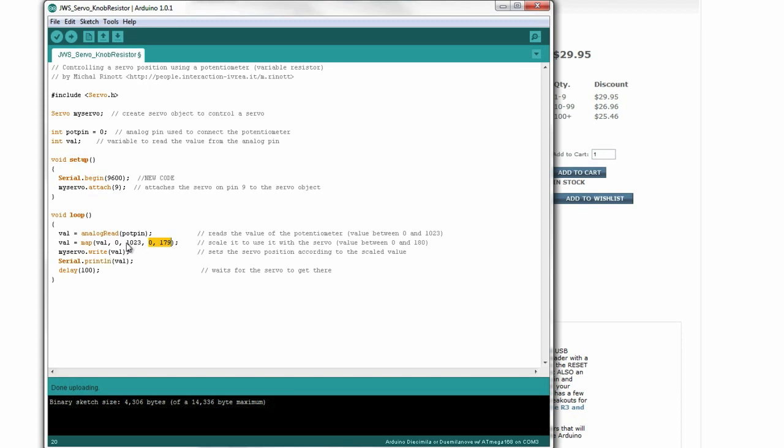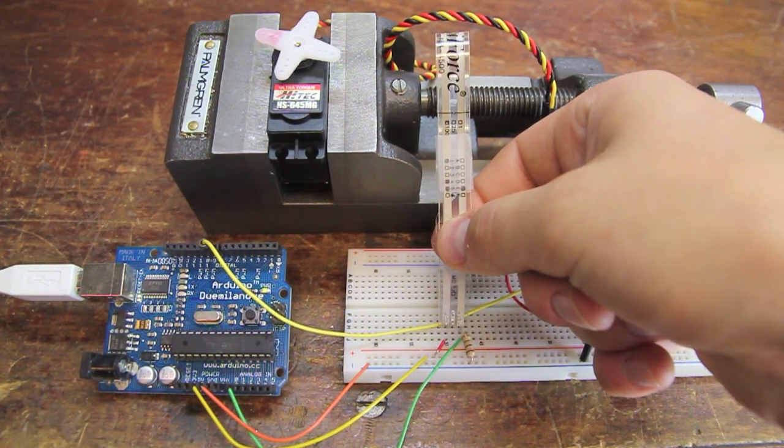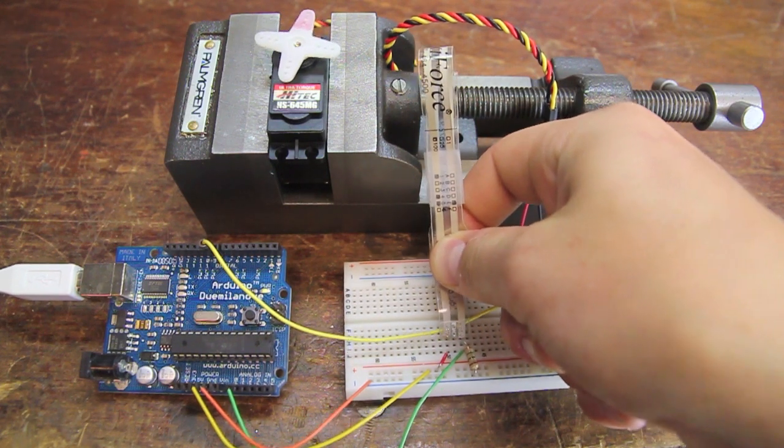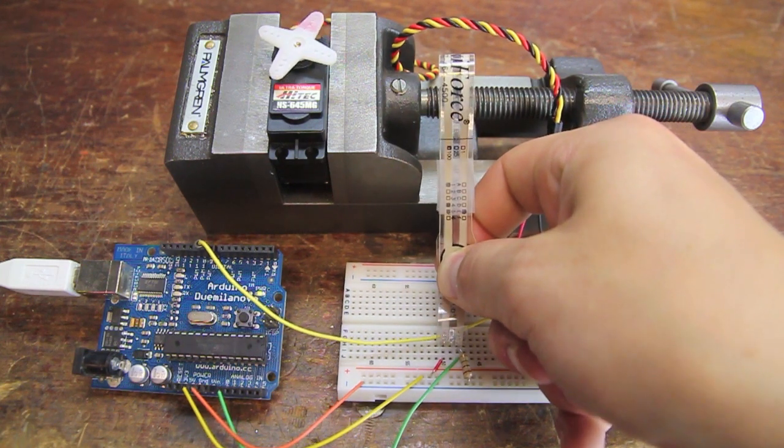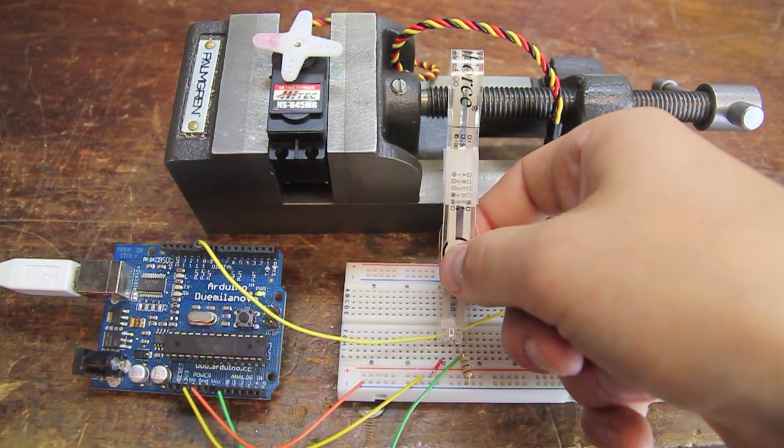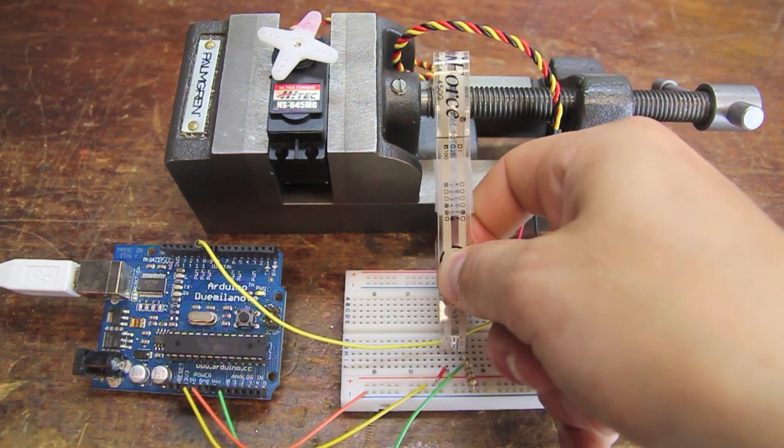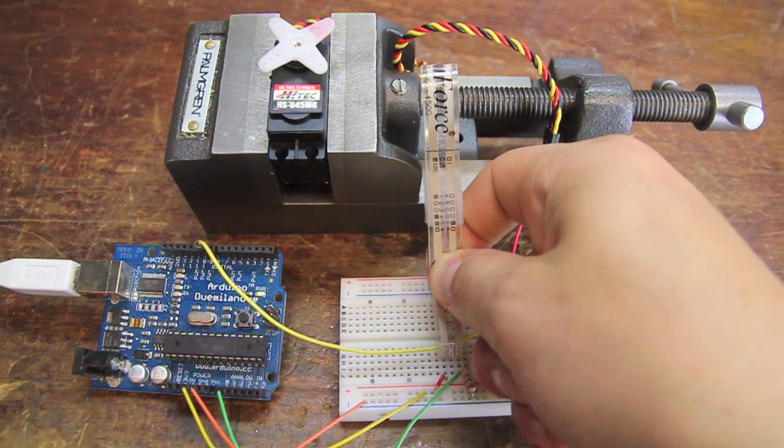So what we'll do is we'll go ahead and upload this code, and then we'll pinch the sensor. As we pinch it, we should get the servo to indicate and move over to that position that correlates to how hard we are squeezing. And there we have it. If I squeeze a little bit, the servo just moves a few degrees, and if I squeeze as hard as I can, it moves over. If you remember, the furthest I got it in the serial monitor was about 600, and that explains why it's not rotating all the way over to the right. Because if you think about it, 600 is only a little more than halfway to the range of 1023. So when it maps that down to the degrees of the servo motion, you'll see that's why I'm only getting over so far.